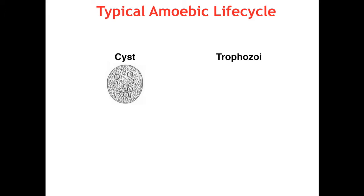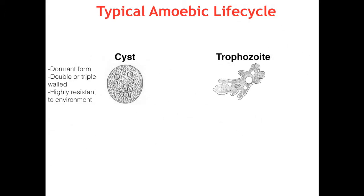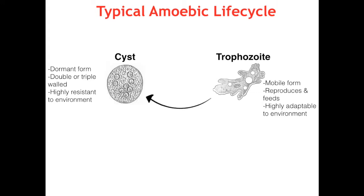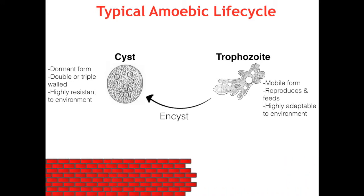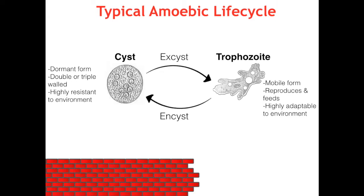Let's go over a typical amoeba lifecycle, which consists of two forms: the cyst and trophozoite. Cysts are the dormant form — double or triple walled and highly resistant to environmental stresses, allowing them to exist outside their host. The trophozoite is the mobile form, allowing for reproduction and feeding. If a trophozoite encounters unfavorable conditions like changes in pH, overcrowding, or lack of food, it will undergo encystment and become the dormant cyst form. When conditions become favorable, excystment occurs and trophozoites escape through the central pore.